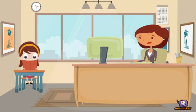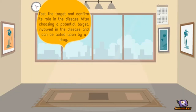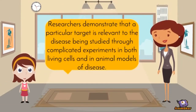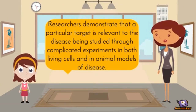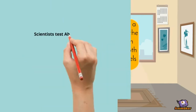After choosing a potential target, scientists must test it and confirm its role in the disease. They must show that the target is actually involved in the disease and can be acted upon by a drug. Target validation is crucial to help scientists avoid research paths that look promising but ultimately lead to dead ends.